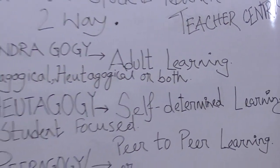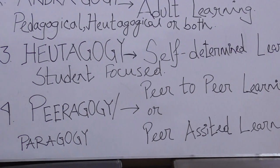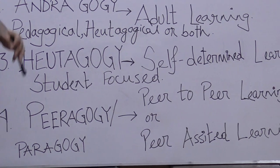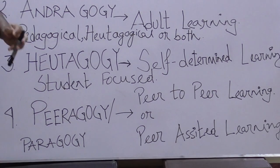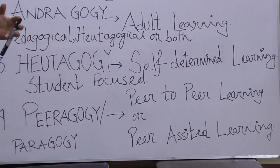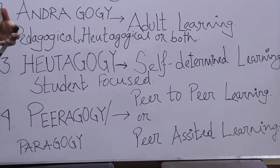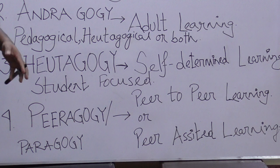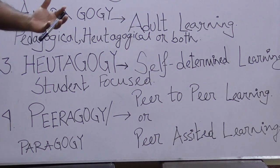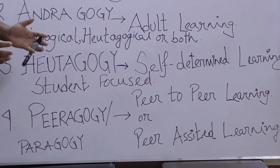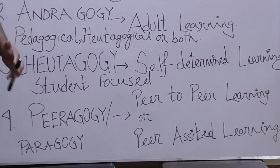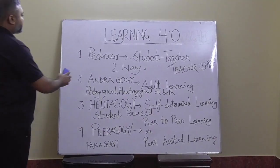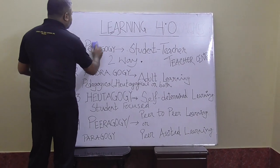The fourth one is peeragogy, otherwise termed as paragogy, or peer-assisted learning. That means students teach each other in a class — suppose somebody is good in mathematics, he teaches his peers, the fellow students, or someone teaches history or science. After receiving the lecture from the teacher, when peers share their learning with each other, this is called peeragogy or paragogy.